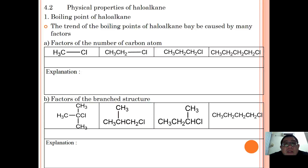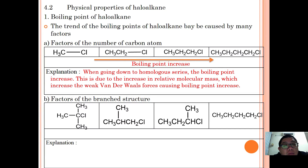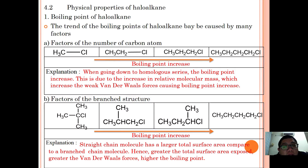Moving to the physical properties of haloalkanes, let us consider boiling point trends. First, as we go down a homologous series, boiling point increases because molecular mass increases, strengthening the van der Waals forces. Second, the factor of total surface area: a straight-chain molecule has a larger total surface area than a branched-chain molecule, so greater surface area leads to stronger van der Waals forces and a higher boiling point.